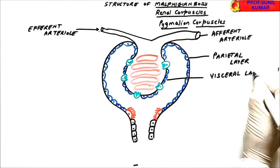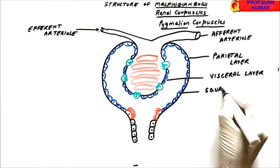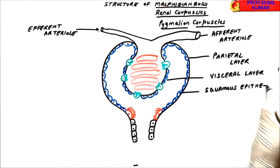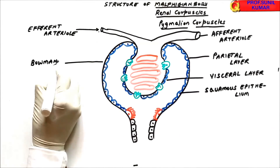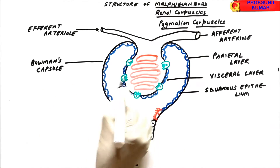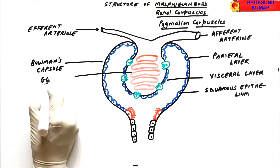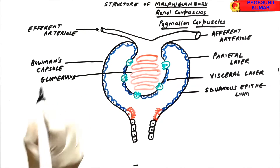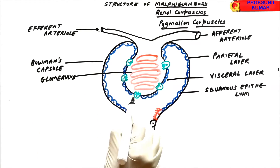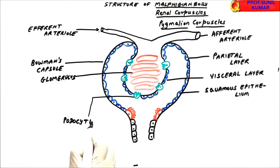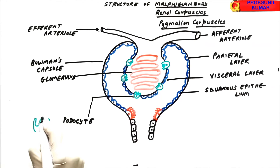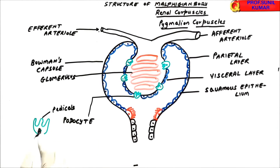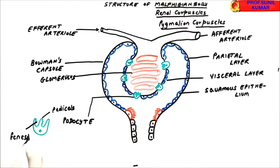The inner layer is made up of the visceral layer, which is discontinuous squamous epithelium. These two layers together are called Bowman's capsule. Inside is a dense network of blood capillaries called the glomerulus. The inner layer is made up of specialized cells called podocytes. The podocytes have finger-like projections called pedicels, while the spaces or slits between the fingers are called fenestrae.